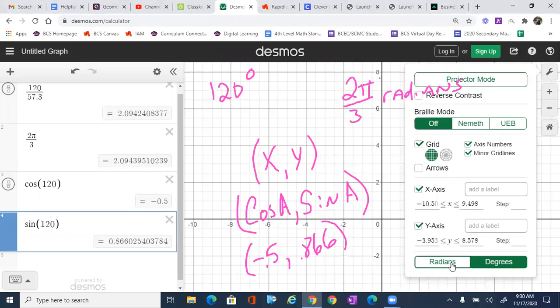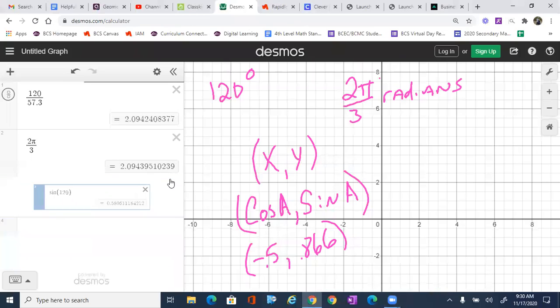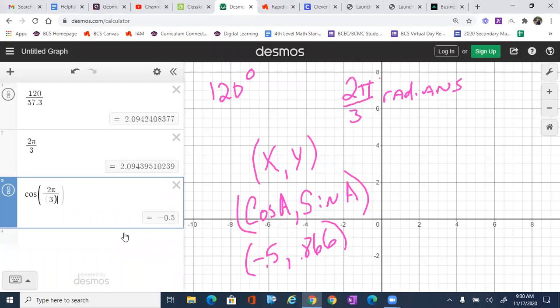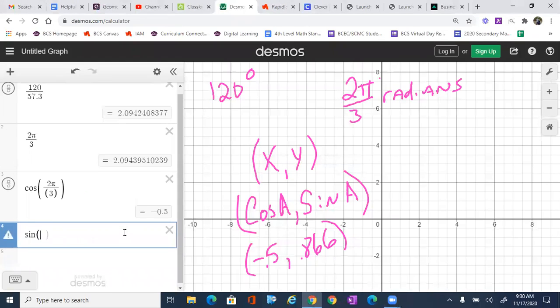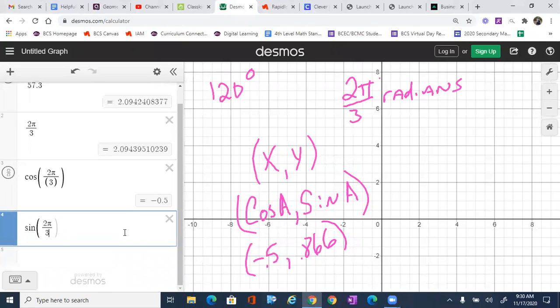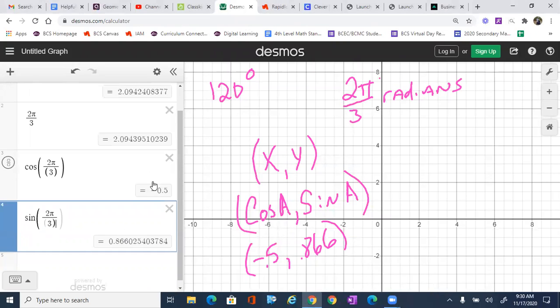Now, we can also do this in radians. The only difference is we need to make sure we are in radians. And you'll notice the answers change. And that gets confusing. But we are in radians now. So I'm going to type in cosine of 2π divided by 3. You'll notice the same answer pops up that we have on the board. I'm going to type sine of 2π. And notice we get negative 0.5 and 0.86.